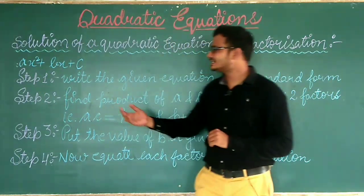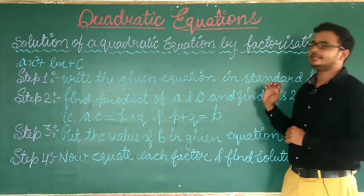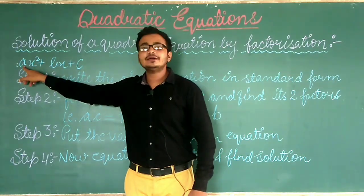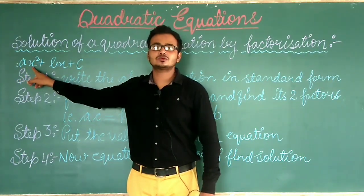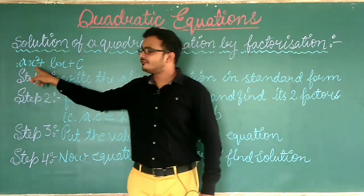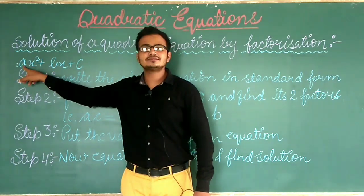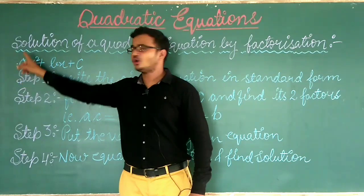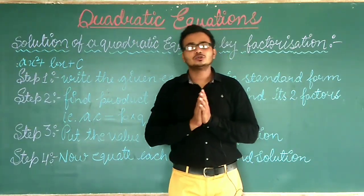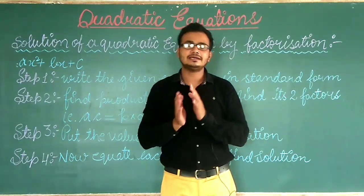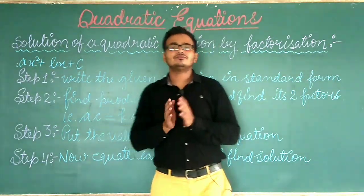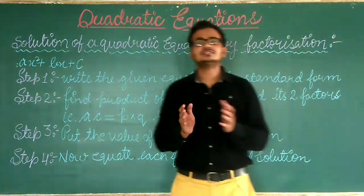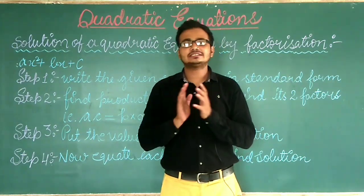Then in the second step, find the product of A and C. A is the coefficient of X square. You have to multiply the coefficient of X square — that is A — into the constant C. So A into C, whatever number is given, multiply them. Then after multiplication, factorize — we will find the factors and arrange them into two factors.